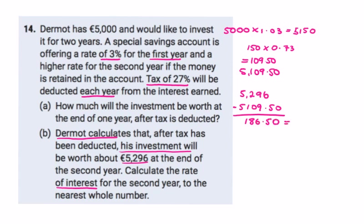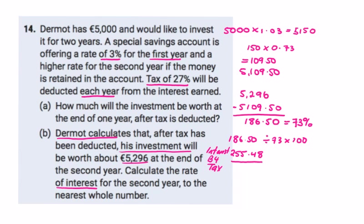That €186.50 is 73% of the gross interest earned, so if we divide 186.50 by 73 and multiply by 100 we find out how much interest he earned before tax. That gives us €255.48. He earned €255.48 starting from €5,109.50, and if we put one over the other and multiply by 100 we get the interest rate — that would be five percent. So the answer to question 14 is five percent.